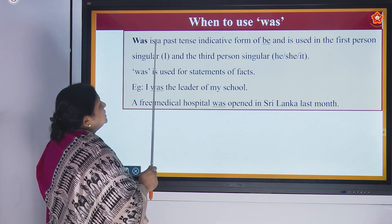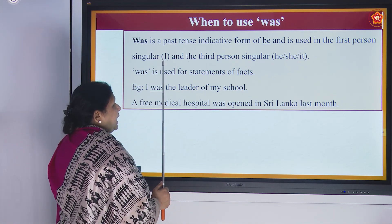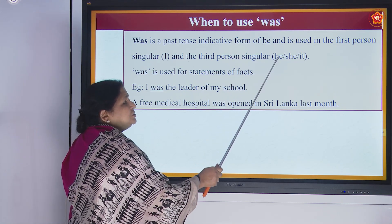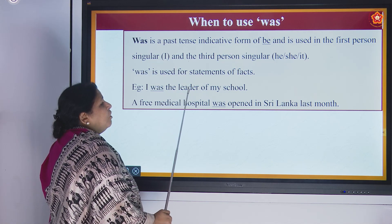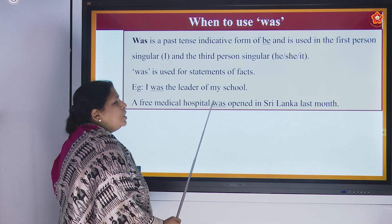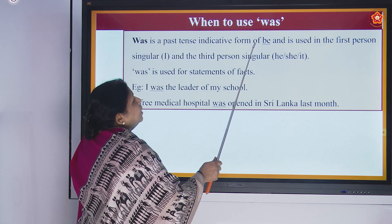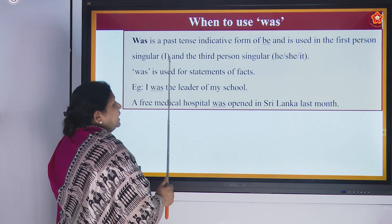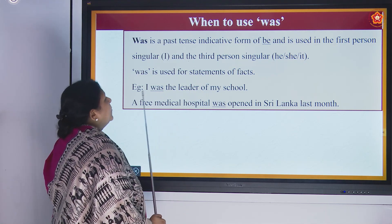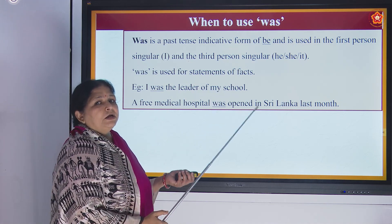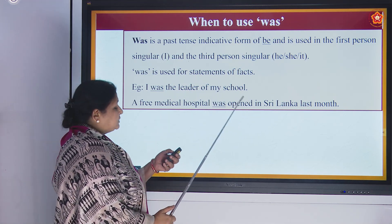When to use was: Was is a past tense indicative form of 'be' and is used in the first person singular — that is, I — and third person singular — he, she, it. Was is used for statements of facts. Example: 'I was the leader of my school.' 'A free medical hospital was opened in Sri Lanka last month.'